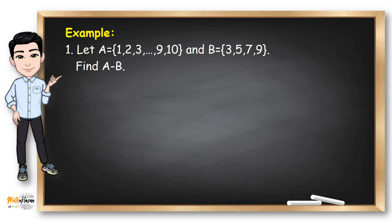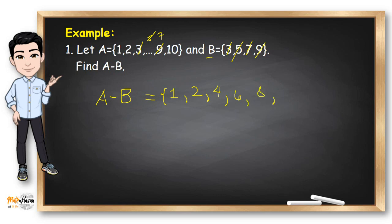Let's try examples. Let A be the set containing 1, 2, 3, 4, 5, 6, 7, 8, 9, 10 and B be the set containing 3, 5, 7, and 9. We need to find A minus B. All we need to do is subtract all elements of B from A. Since A contains 3, 5, 7, and 9 — which are all in B — we remove them. What remains in A is 1, 2, 4, 6, 8, and 10. This is the difference of sets A and B.